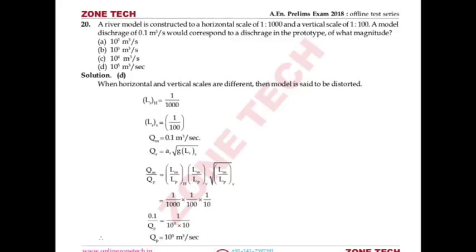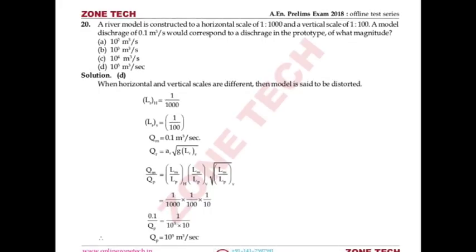Question number 20: A river model is constructed to a horizontal scale of 1:1000 and vertical scale of 1:100. Model discharge is 0.1 m³/s. Find corresponding prototype discharge. This is a distorted model where horizontal and vertical scales are different. We find Q_R = Q_M/Q_P = area × velocity ratio.